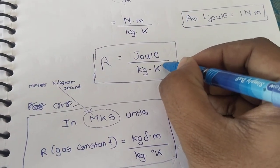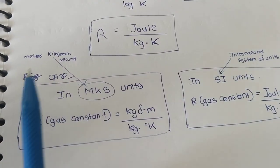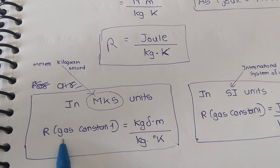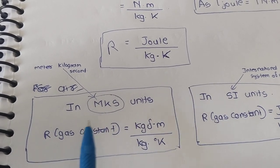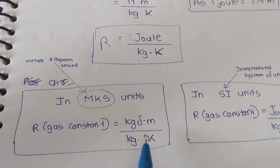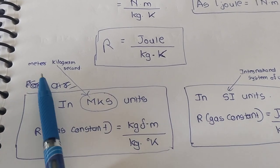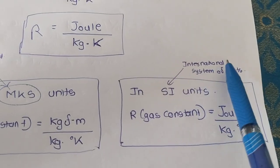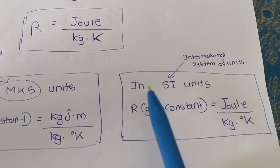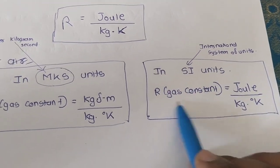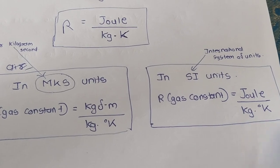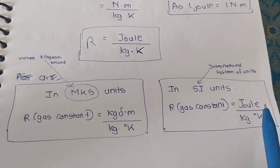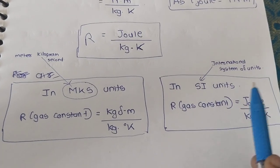So to summarize: in MKS units (meter kilogram second units), R the gas constant is given by kgf·meter per kg·degree Kelvin. In SI units (International System of Units), R is given by Joule per kg·degree Kelvin. This is the basic thing we need to know before calculating any numericals, and we should remember this.